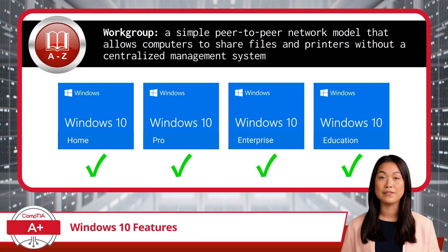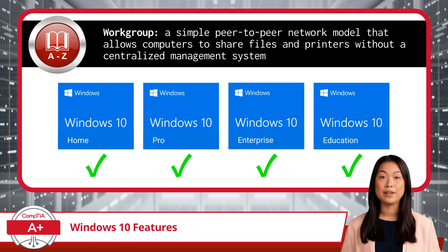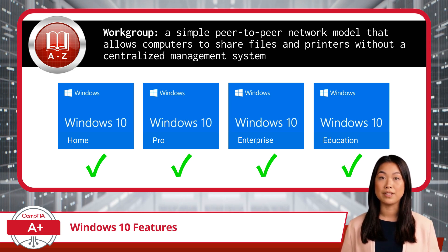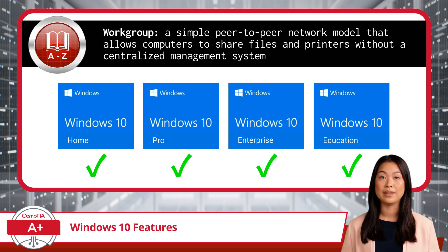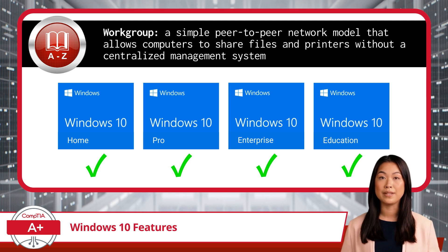One of the fundamental differences between Windows 10 editions is the support for Windows Workgroups versus Domain Access. A Windows Workgroup is a simple peer-to-peer network model that allows computers to share files and printers without a centralized management system. Each computer in a Workgroup is responsible for its own security and settings. Workgroups are supported by all Windows 10 editions but are best suited for home environments and small offices.